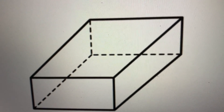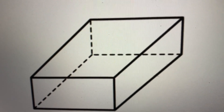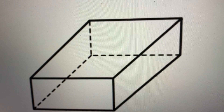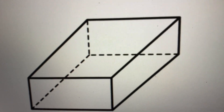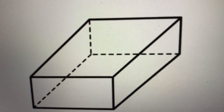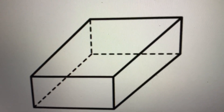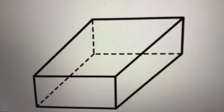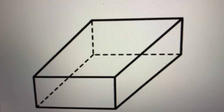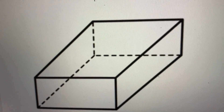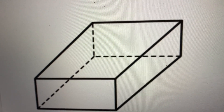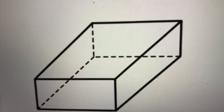Tell your neighbor really loudly so I can hear you — rectangular prism! This is a 3D shape because it has faces, it has corners and edges, and it is not flat.